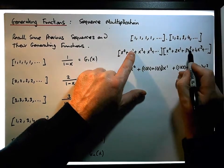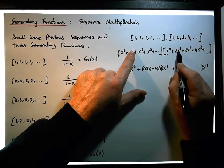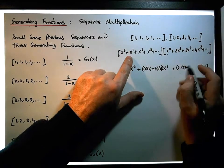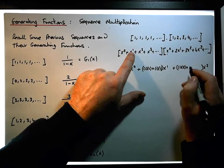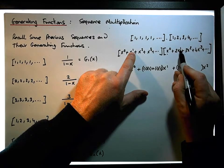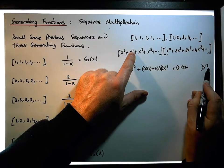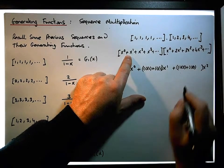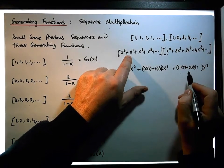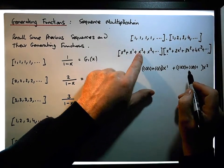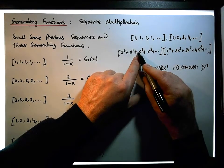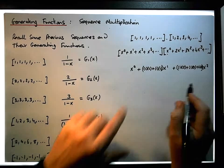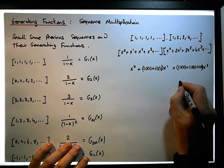Plus the coefficient of the x¹ term times the coefficient of the x¹ term here gives us two when we add the indexes. So we multiply the coefficients, which is ones times two. Plus the final one is the x² term times the x⁰ term, which is simply ones times one, so it's one times one.